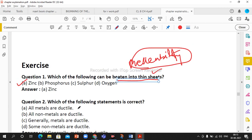Next question: which of the following statement is correct? Generally metals are ductile. This statement is correct. Now ductile, what is ductile? The property of metal by which it can be drawn into wire is called ductility.